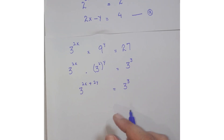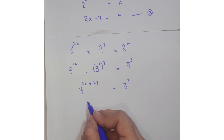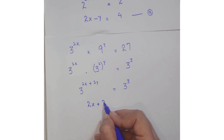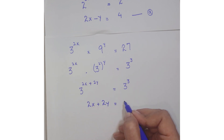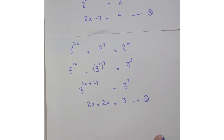On both sides the bases are the same, so equate their exponents: 2x plus 2y equals 3. Call this equation B.